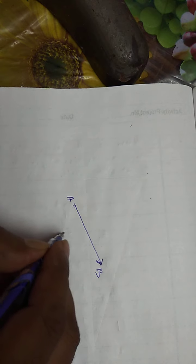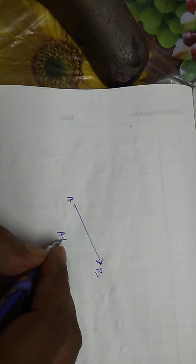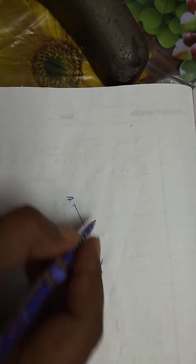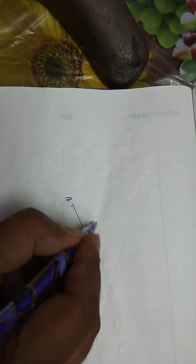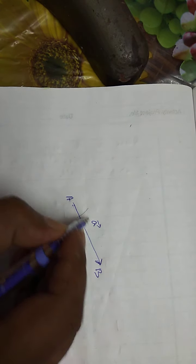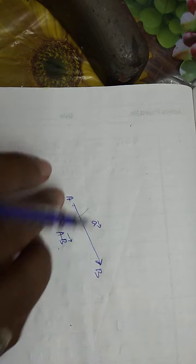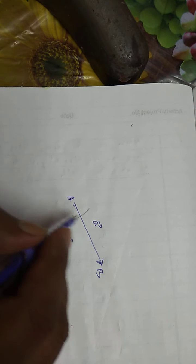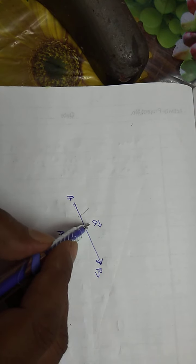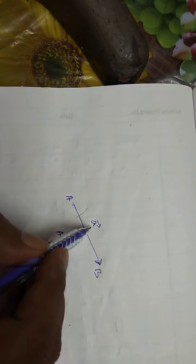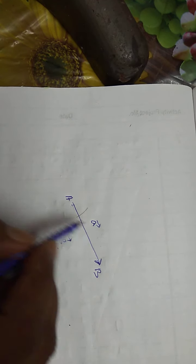Symbolically, it is written as vector AB, and if you name it vector A, it can also be written as a small 'a' with an arrow over it.